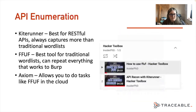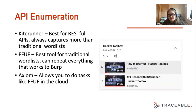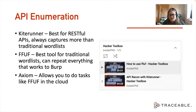API enumeration is far more useful. My number one recommendation for API enumeration, if you're on the red team doing black box testing, is Kite Runner — by far the best tool for RESTful APIs. I always find it captures more than traditional word lists and does a really good job finding more unique endpoints. It's not testing for old-style SOAP APIs — it's testing just for RESTful. FFUF is the tool to use if you do have a traditional word list — it's definitely the fastest tool.